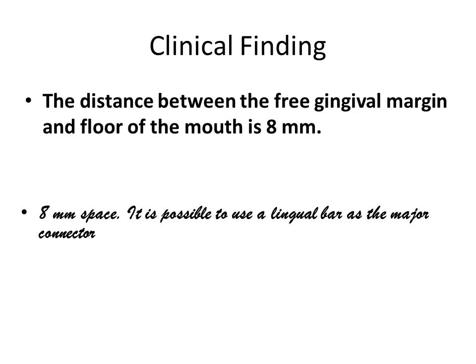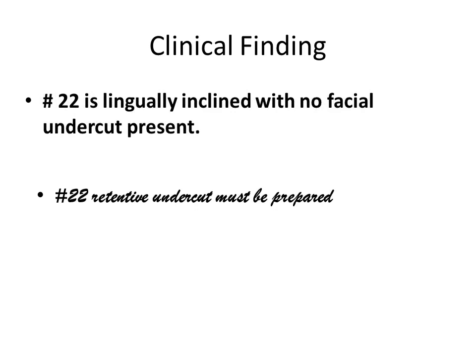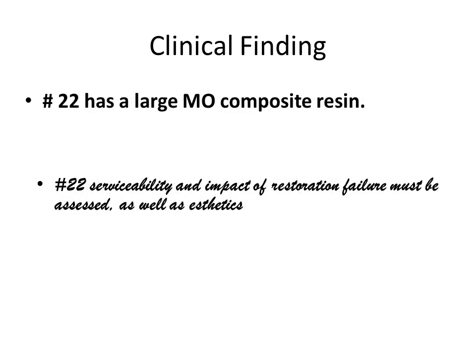Tooth number 22 is noted to be lingually inclined with no facial undercut present. This means we will likely have to create undercut in some way. Based on the path of insertion, it may not be possible to drill a place for undercut on the tooth; it may be necessary to create undercut with composite resin or to crown the tooth entirely.